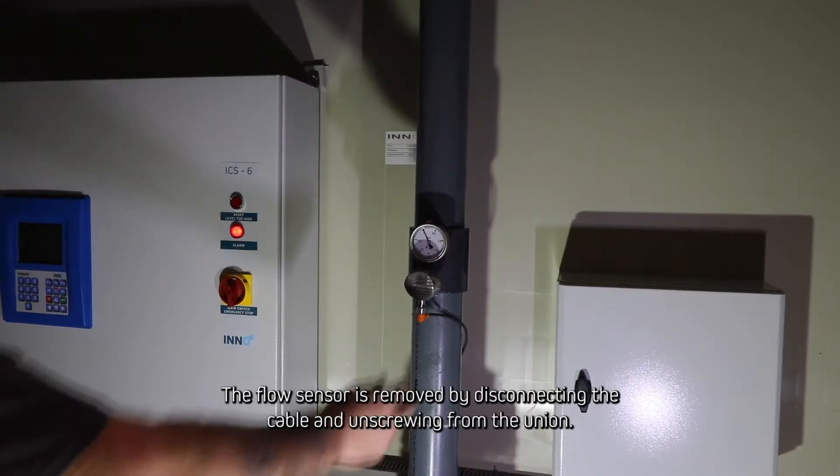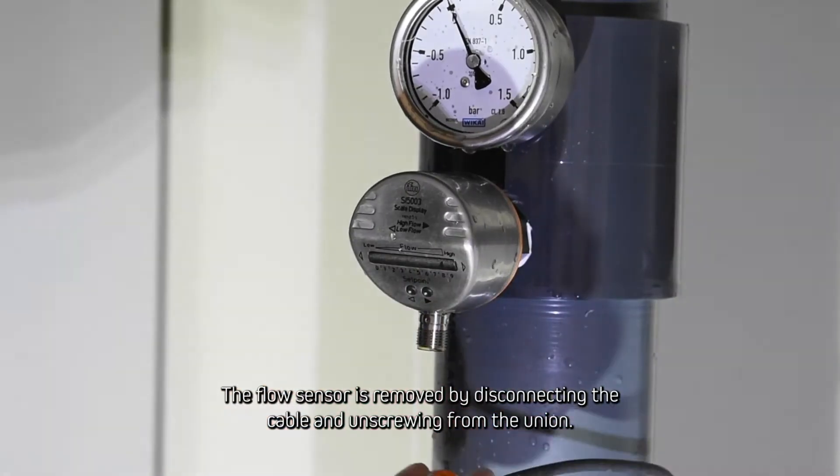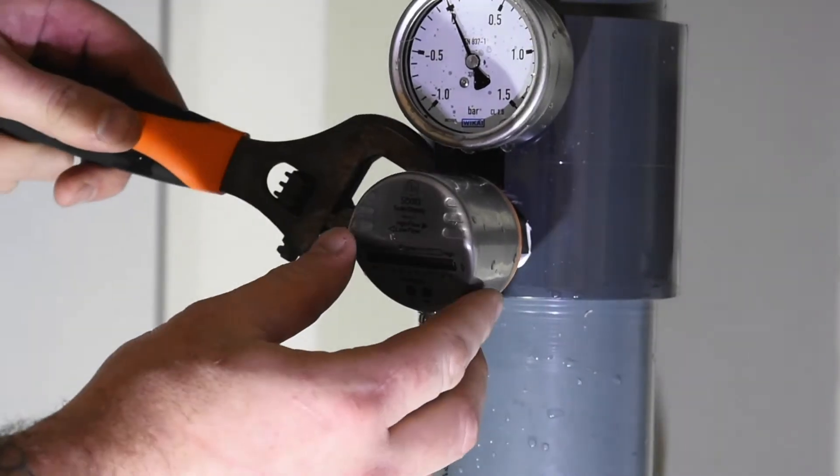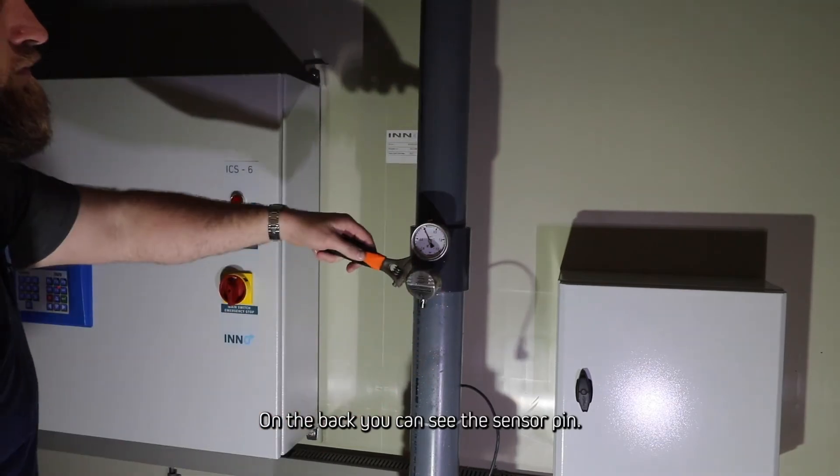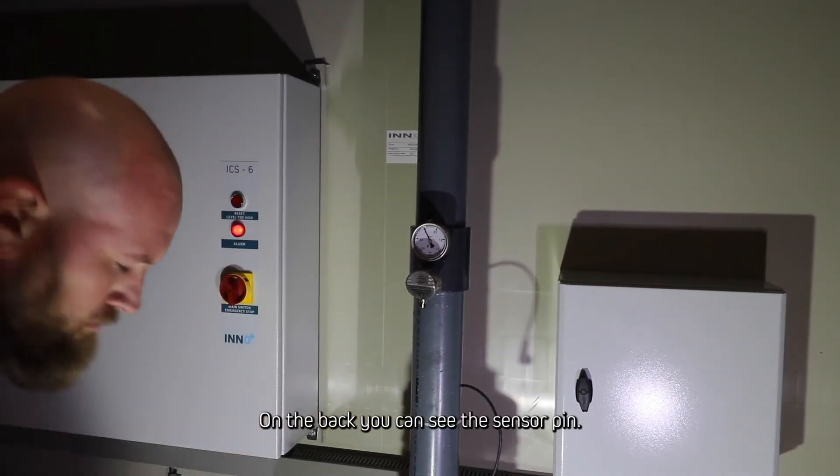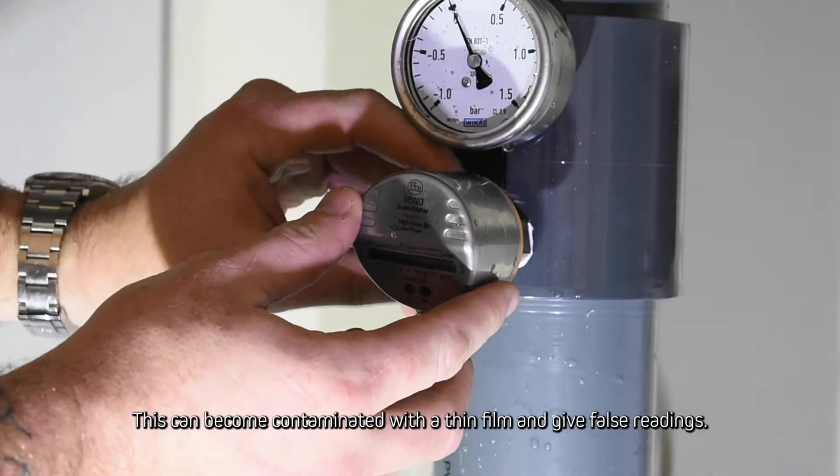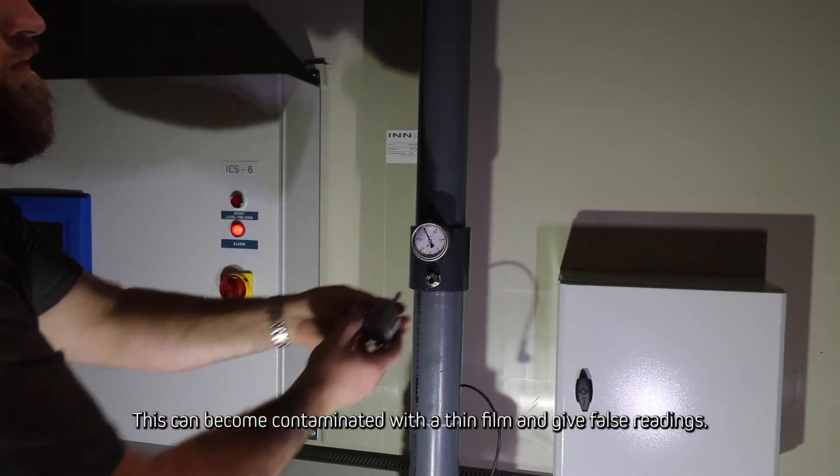The flow sensor can be removed by disconnecting the cable and unscrewing from the union. On the back you can see the sensor pin, which can become contaminated with a thin layer of film and give false readings.